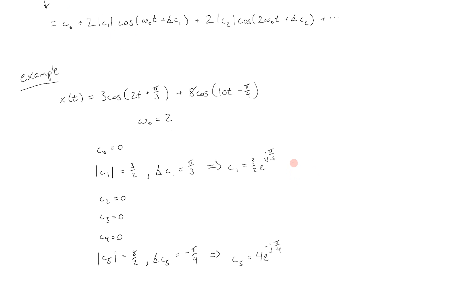From here, we can also get the corresponding negative coefficients. Specifically, c sub negative 1, following those symmetries, is 3 halves e to the minus j pi thirds — same amplitude, opposite phase. And c sub negative 5 is equal to 4 e to the positive j pi fourths, again preserving those symmetries. c sub negative 2, c sub negative 3, and so on are 0. So what we come up with is that there are only 4 non-zero Fourier series coefficients that completely define this entire signal.